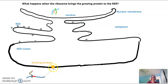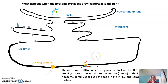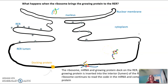The ribosome brings everything to the RER to a docking protein — a protein sitting in the RER membrane. The ribosome, mRNA, and the growing protein dock onto the RER, and the growing protein is inserted into the interior called the RER lumen. The ribosome continues reading the mRNA, adding amino acids to the growing protein now inside the lumen. Once done, it releases the docking protein, and the newly made protein folds into its tertiary structure based on R-group interactions such as ionic bonds, hydrogen bonds, and disulfide linkages.